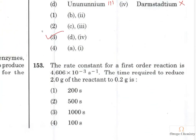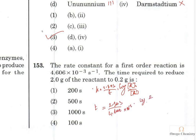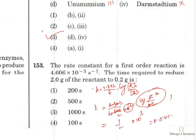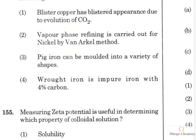Question 153: The rate constant for a first-order reaction is 4.606 × 10⁻³. Using k = 2.303/t × log(r₀/r), with r₀ = 2 g and r = 0.2 g: t = (2.303/4.606 × 10⁻³) × log(2/0.2). Log 10 = 1, and 2.303/4.606 = 0.5, so t = 0.5 × 10³ = 500 seconds. Option 2 is the right answer.